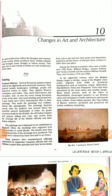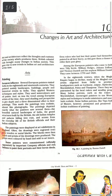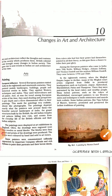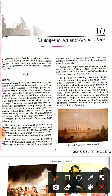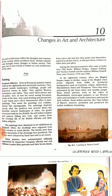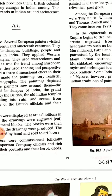Hello students, good morning everyone. Today in this video I am going to summarize Chapter 8: Changes in Art and Architecture. This chapter you have already learned in your previous classes, but let us see what it is about and which topics we have learned. This chapter tells us about the changes in art and architecture during British rule.